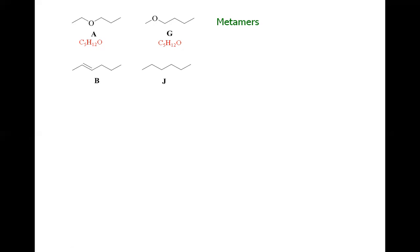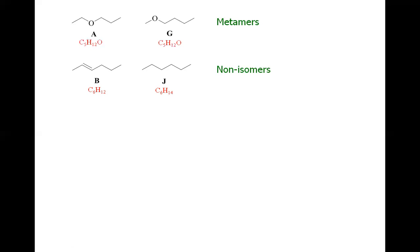For the pair B and J: compound B has the molecular formula C6H12, with six carbons and twelve hydrogens. However, compound J has fourteen hydrogens, not twelve. Since they have different molecular formulas, B and J are non-isomers — they are simply different compounds.